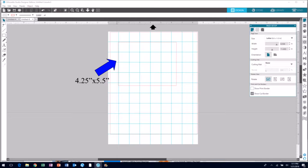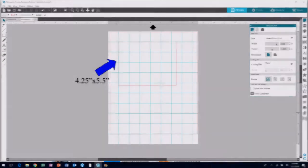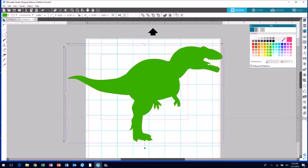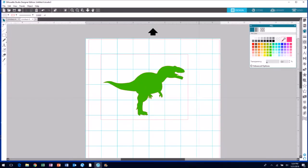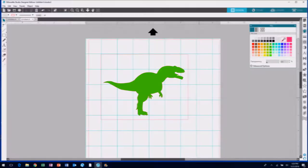Anytime I design in Silhouette, I start out with what my finish size will be. Here I just created a rectangle. I'm not going to cut that out with the Silhouette, but you can see it just helps me get the scale correct. So I drop in that T-Rex and resize them to fit on the card.